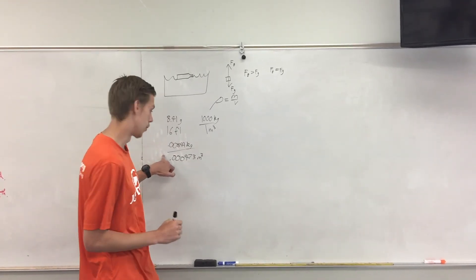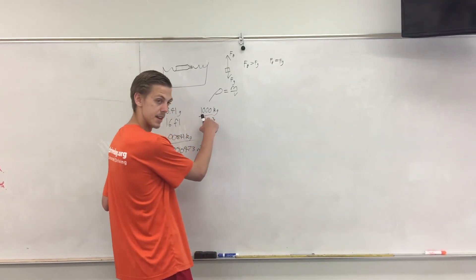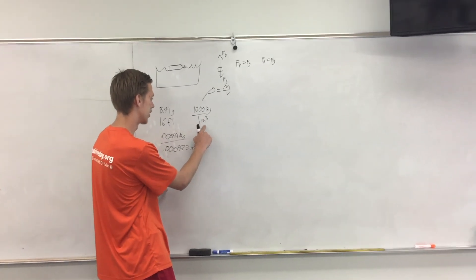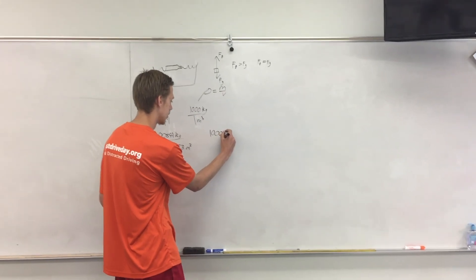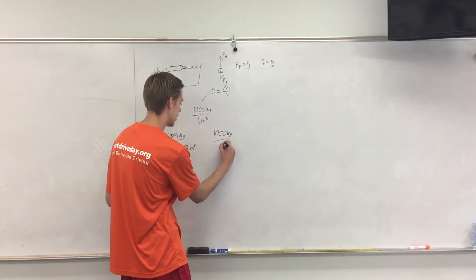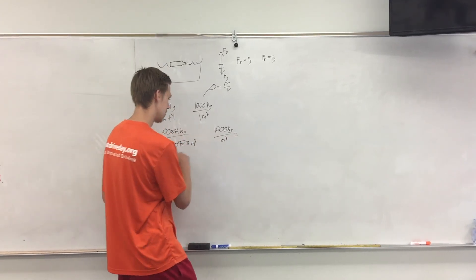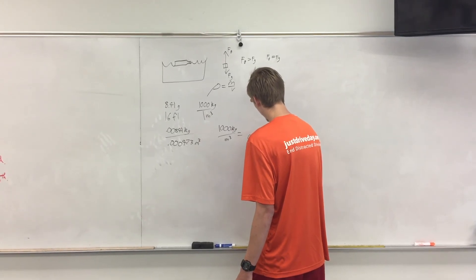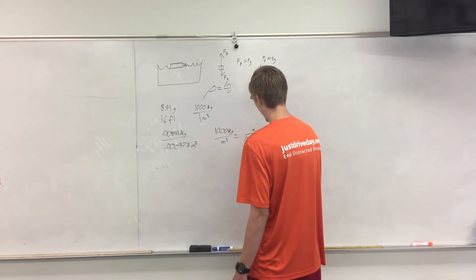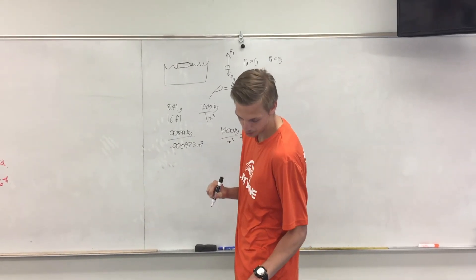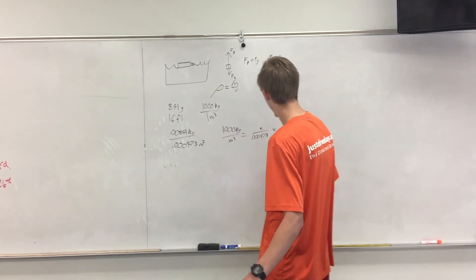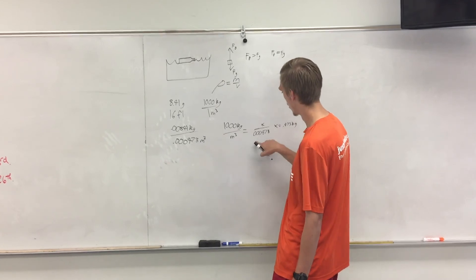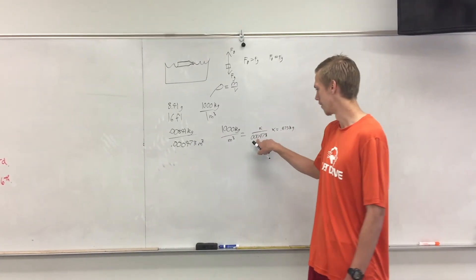That gives us the density of the water bottle. We also have the density of the fresh water it's in. So now we're going to get a common denominator for the water and set up a proportion to match this volume.